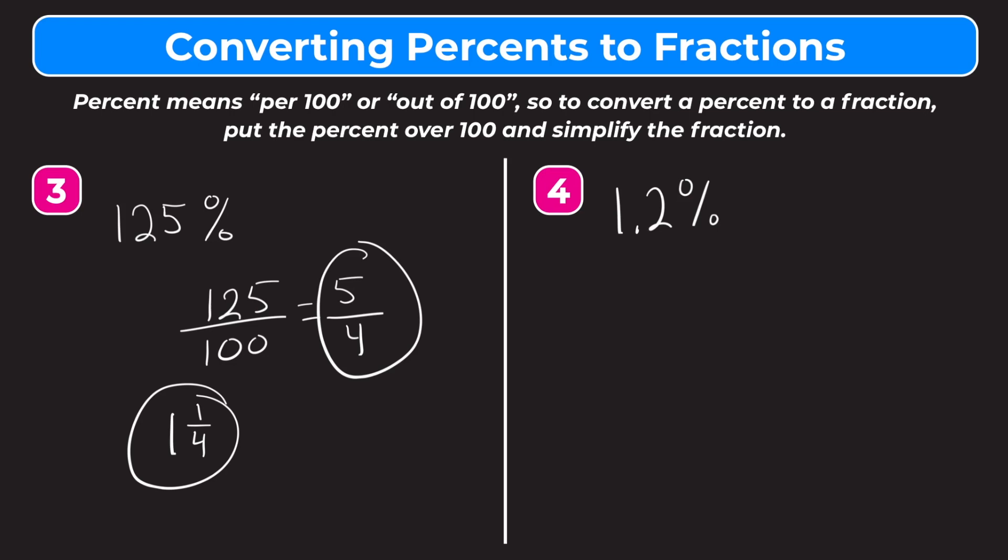Let's take a look at our last example, number four. We have 1.2%. Notice that this percent is a decimal, a decimal percent. It's 1.2 or 1 and 2/10 percent. Now we can go through our steps, and you're going to see there's an extra step when you have a decimal percentage, but let's go through and you'll figure that out as we go. So we have 1.2%, so we put 1.2 over 100.